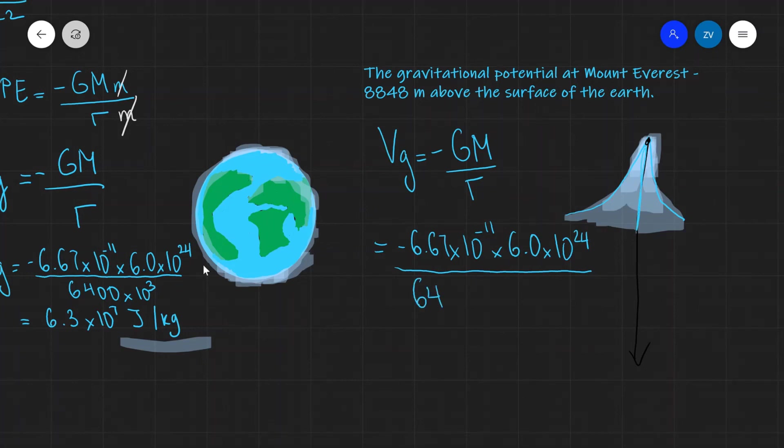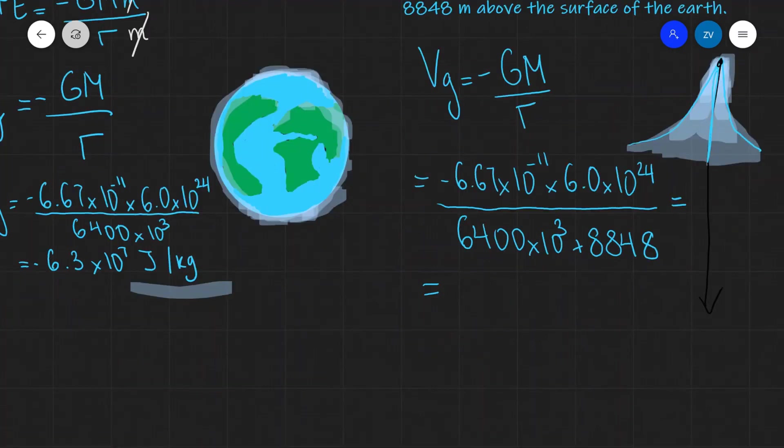This will be equal to 6,400 kilometers, times 10 to the power of 3, plus the height of Mount Everest above the surface which is 8,848 meters. And if we plug this into a scientific calculator, we are going to get minus 6.2 times 10 to the power of 7 joules per kilogram.